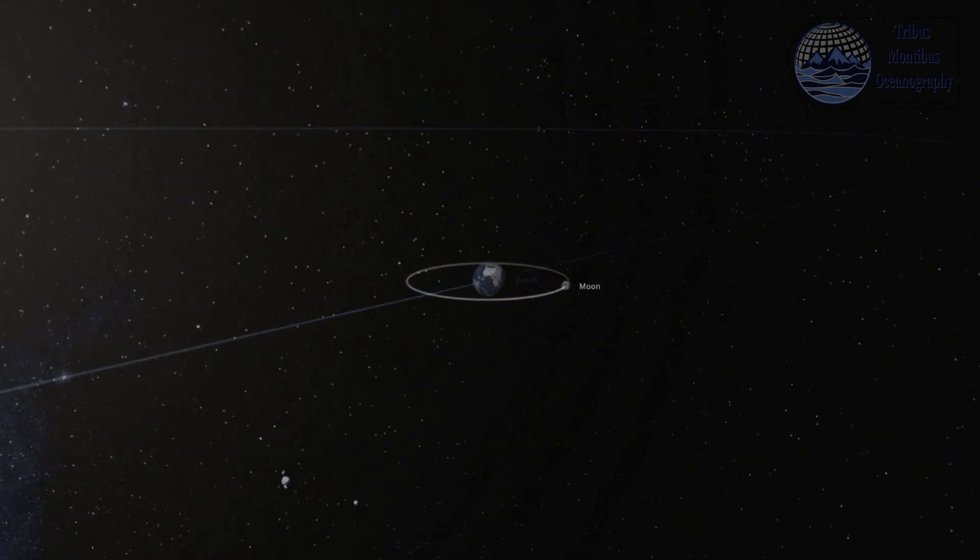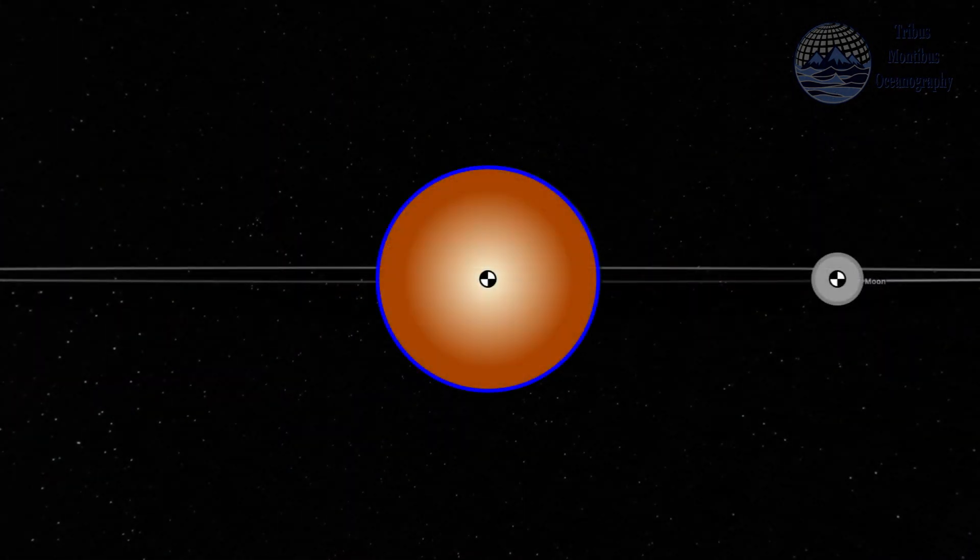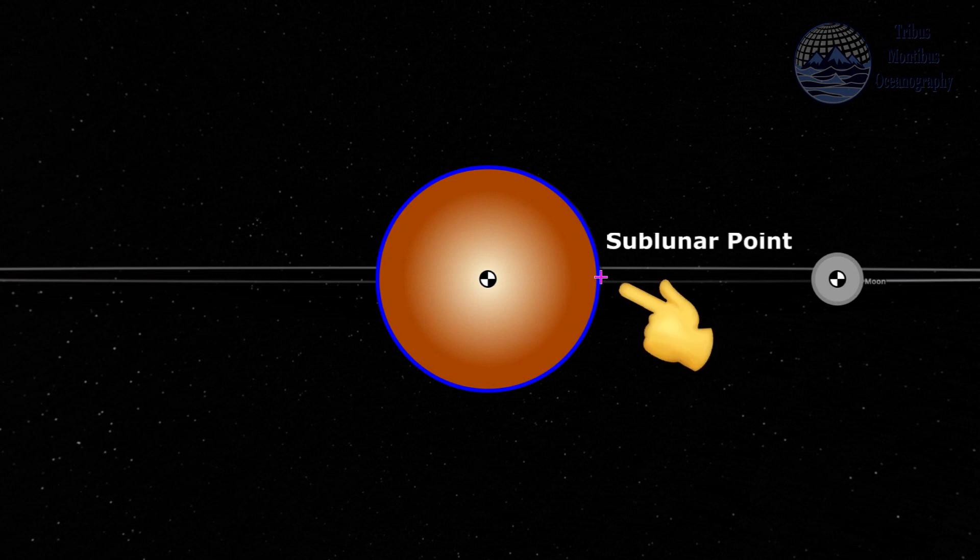You can see how this works for different surface positions in this cross-section diagram. For the sublunar point, the surface point closest to the Moon, it's pretty straightforward. You calculate the acceleration which the Moon's attraction would want to give an object there. Then you subtract the acceleration of the Earth underneath. You can visualize this subtraction by inverting the Earth's acceleration vector and placing it at the tip of the object's acceleration vector. Now this difference is the vector by which our object would want to accelerate with respect to the Earth due to the Moon's attraction.